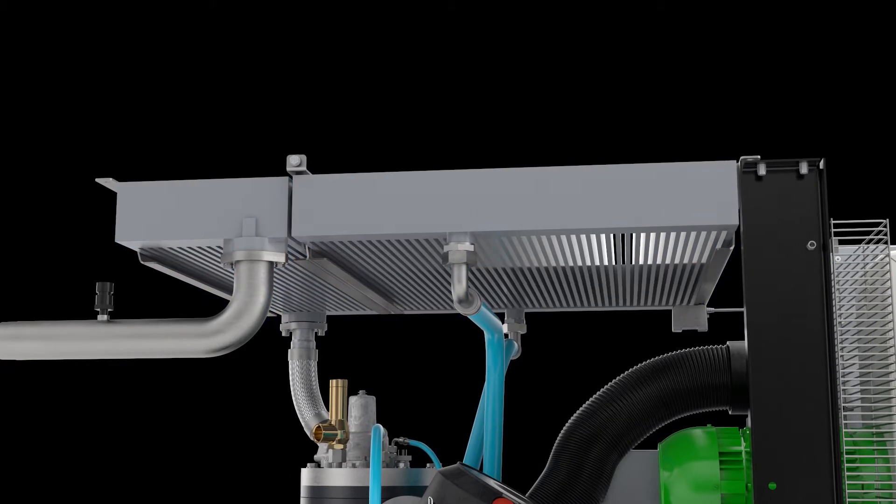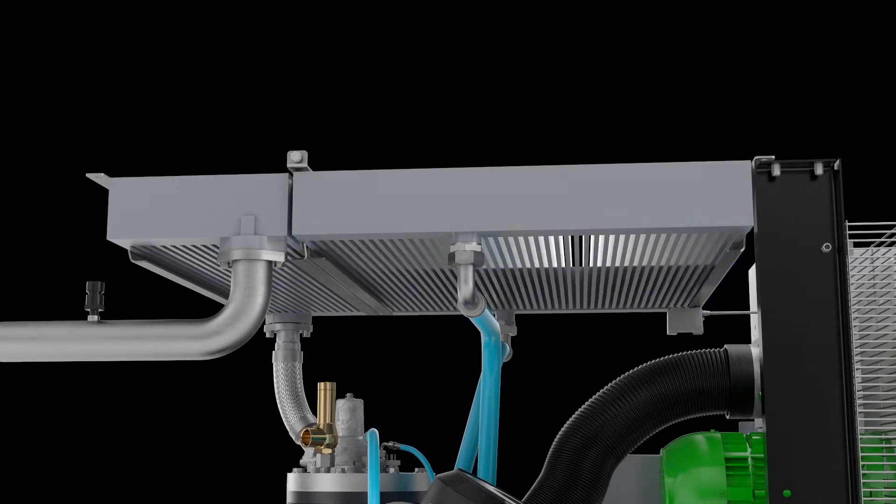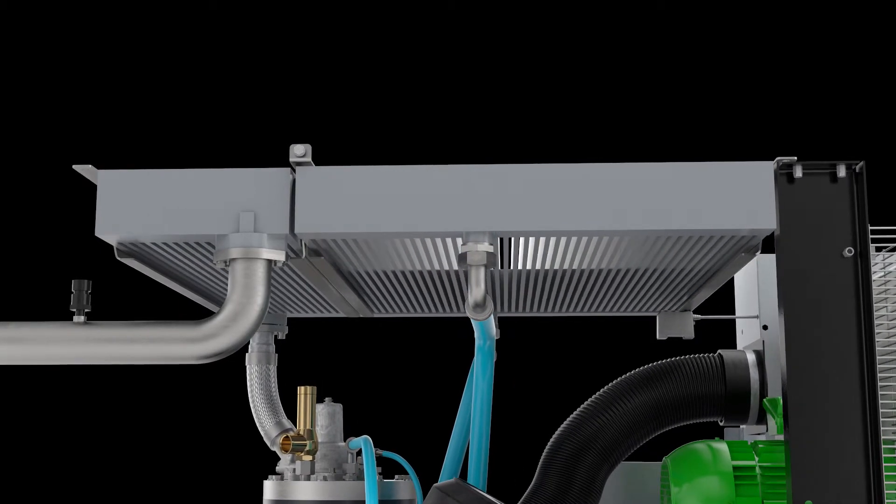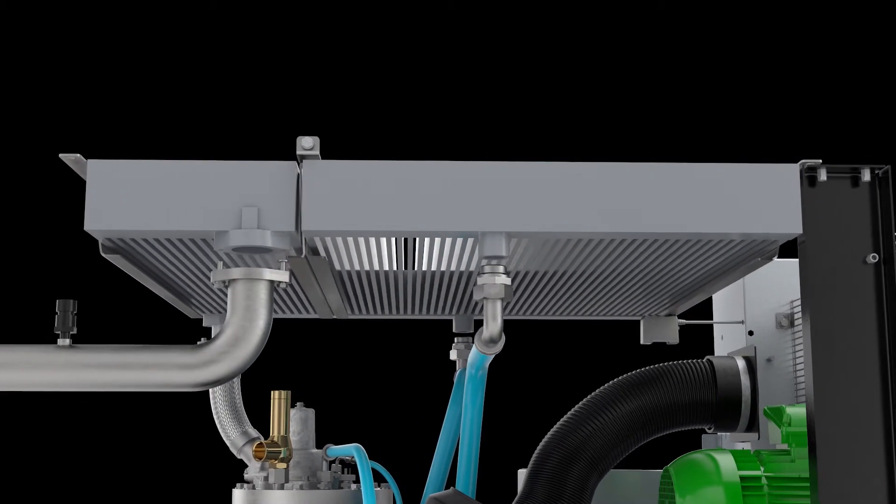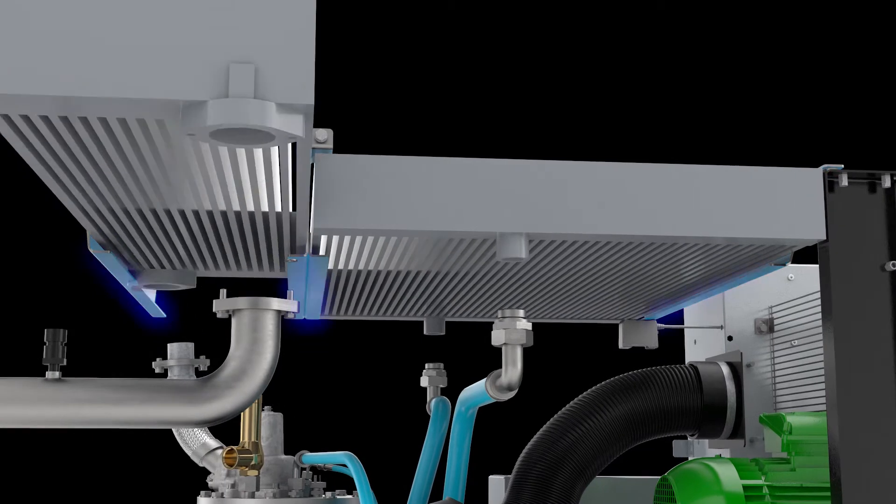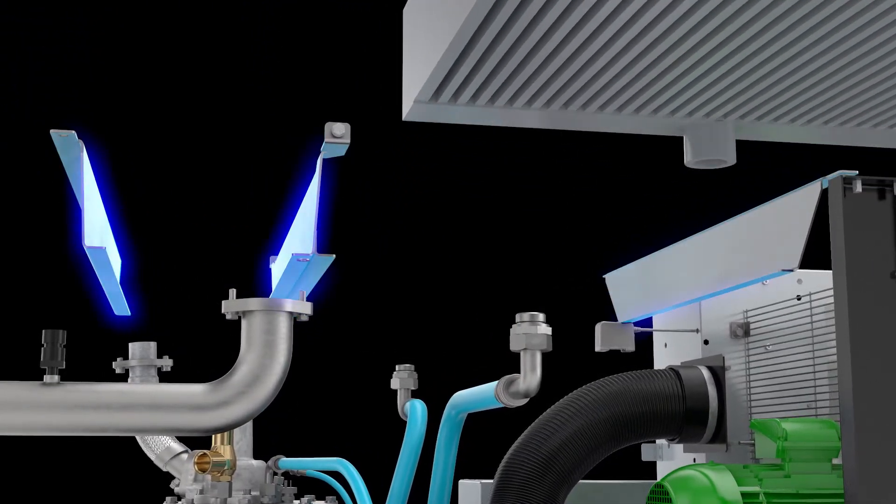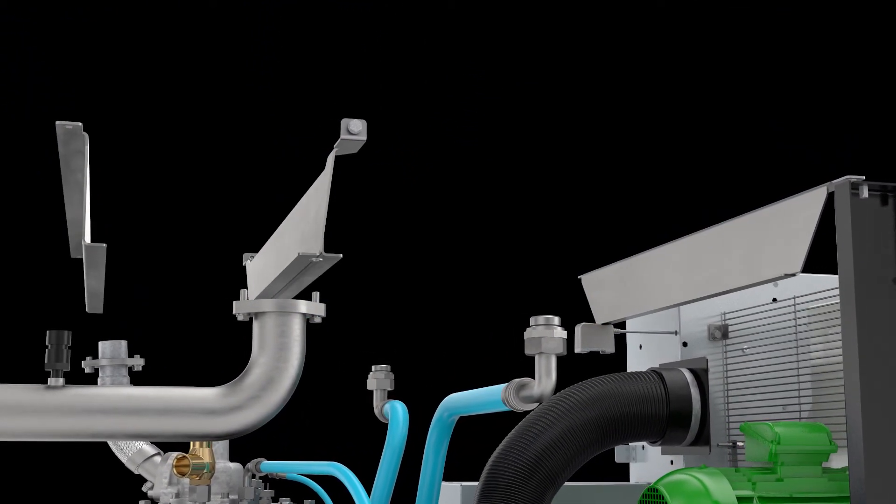Two separate cooler blocks, one for air and one for oil, are used to reduce the risk of thermal shocks and increase reliability. The coolers are mounted on gliding rails and can be easily dragged out and cleaned, making service a one-person job.